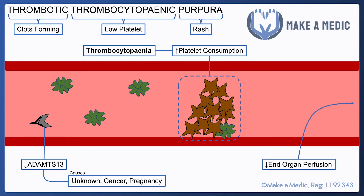Just as in HUS, this means red cells aren't going to get through very easily — they get sheared, reducing end-organ perfusion. The key difference between TTP and HUS is that HUS only affects the glomerular vessels, so reduced end-organ perfusion leads to renal impairment. In TTP, it can happen basically anywhere, so if reduced end-organ perfusion affects the brain specifically, it can result in confusion — which is why one of the defining features of TTP is some sort of change in brain function.